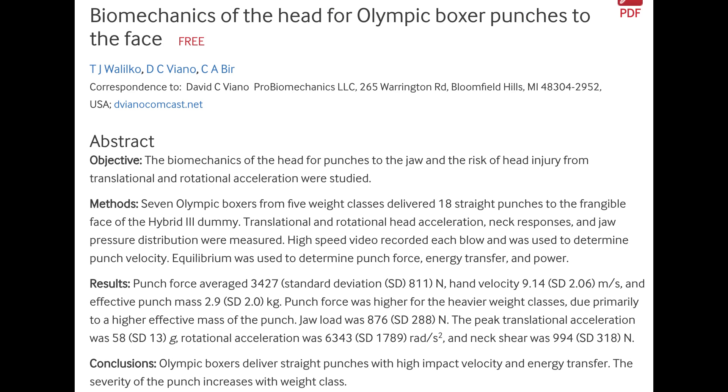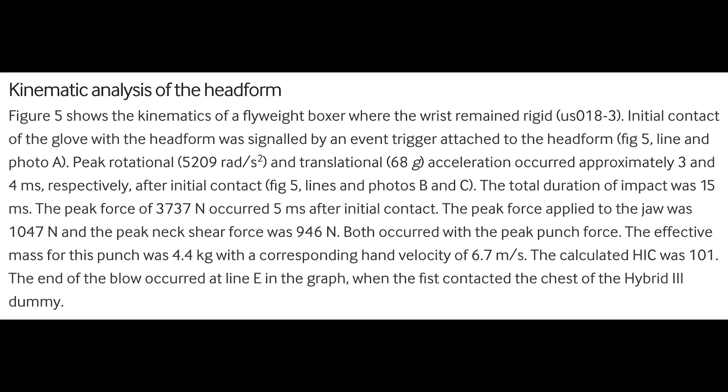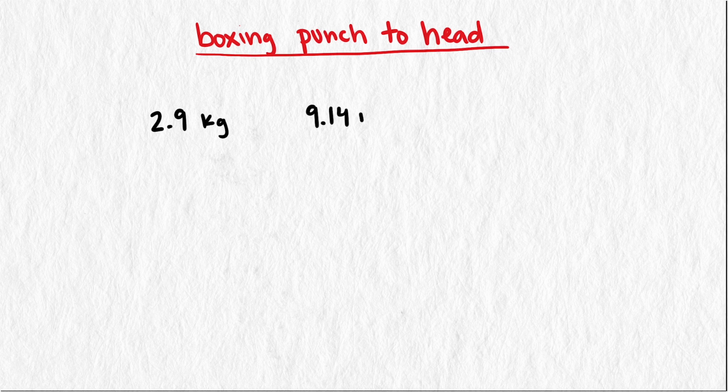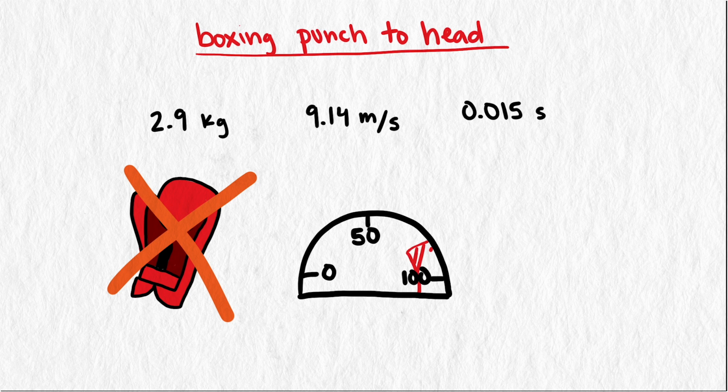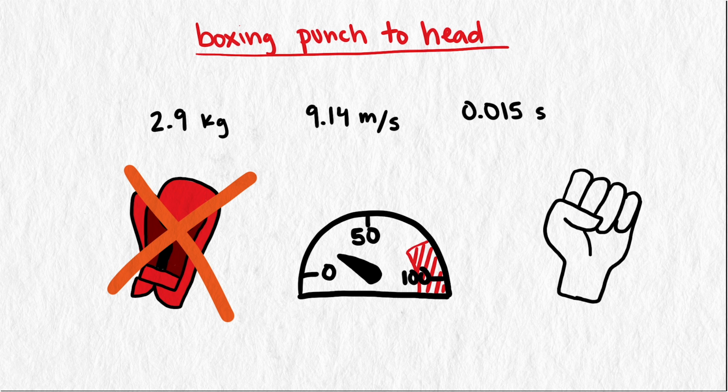I found one article that analyzed the biomechanics of Olympic boxers. They gathered data and found that boxing punches to the head averaged a hand mass of 2.9 kilograms, a hand velocity of 9.14 meters per second, and contact duration of 0.015 seconds. But the situation we're analyzing is a little different. Our boxer didn't have boxing gloves, so his hand mass will be smaller. He was an amateur, so the velocity will be a little bit less, and the contact duration will be shorter since a bare fist is a harder surface than a boxing glove.